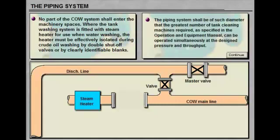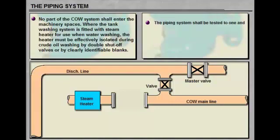The piping system shall be of such diameter that the greatest number of tank cleaning machines required, as specified in the Operation and Equipment Manual, can be operated simultaneously at the designed pressure and throughput. The piping system shall be tested to one and a half times the working pressure after it has been installed on the ship.